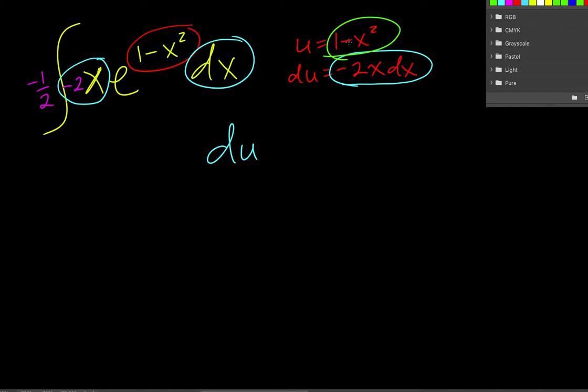And then I have this thing, and so that becomes u. So I have e to the u, and I still have this, and I still have my negative 1 half.